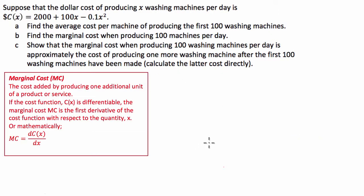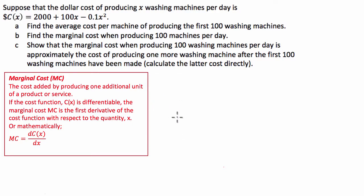On to part B. We're asked to find the marginal cost of producing 100 machines per day. The marginal cost is the cost added by producing one additional unit of the product or service — it's the cost of the next item we're going to produce. The way we find this mathematically is, if we have a cost function like this one which is differentiable, we can take the first derivative of that cost function with respect to the quantity produced, or find the derivative of cost with respect to x.